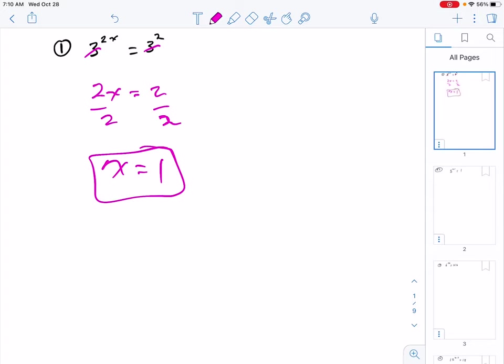So if the bases are the same, you can simply eliminate them because the exponents have to be the same.